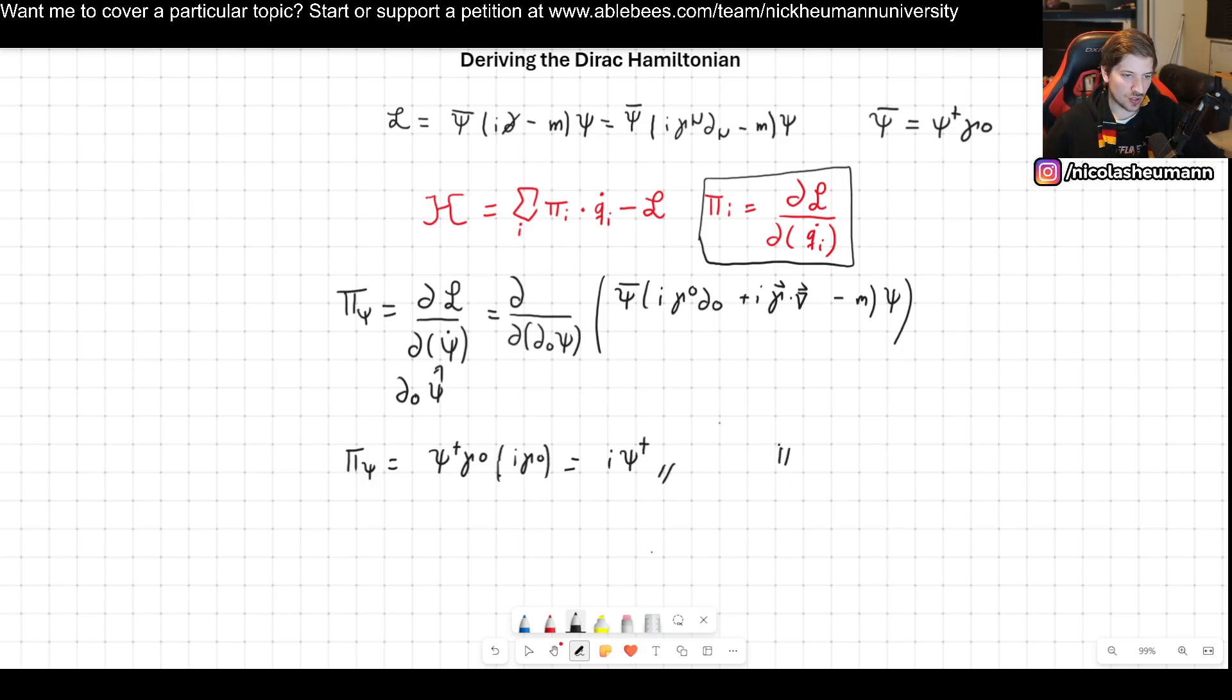So that is the first case. Now for the case of pi psi bar dot, we need to take the derivative of the Lagrangian with respect to psi bar dot. But there is no psi bar dot anywhere in our Lagrangian. So that's simply zero.